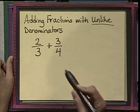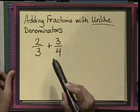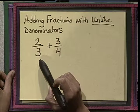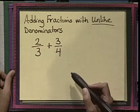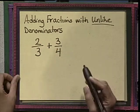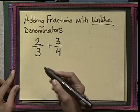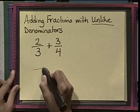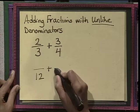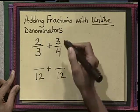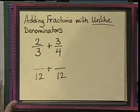We know that 3 times 4 equals 12. So now we are going to change both of these fractions to fractions with a denominator of 12. So 2/3 is going to be changed to a denominator with 12, and 3/4 will also be changed to a denominator with 12.